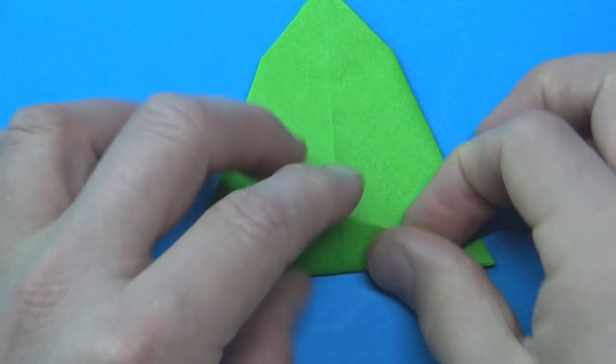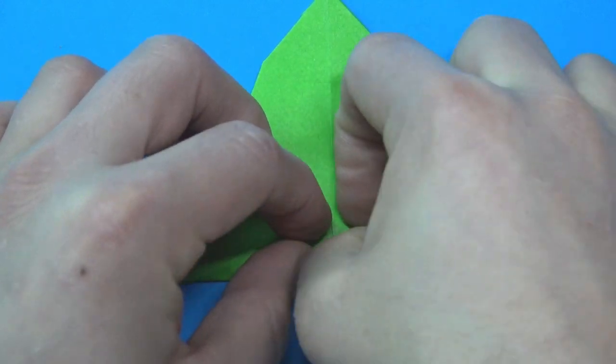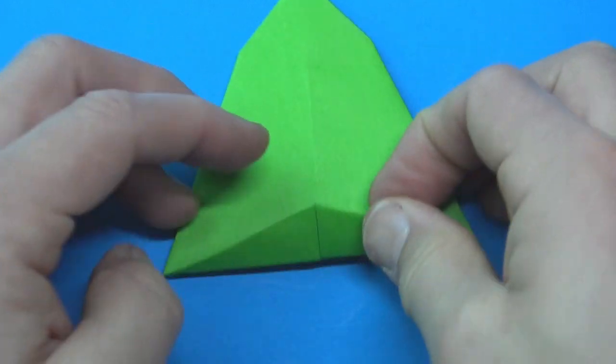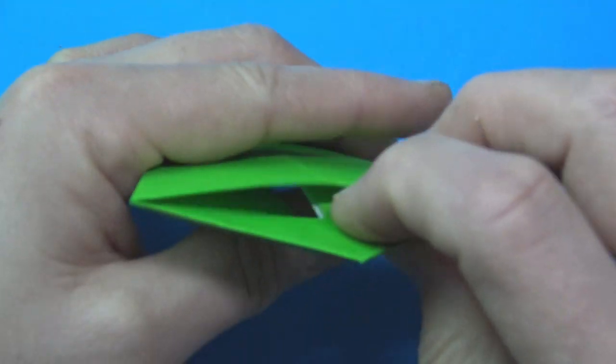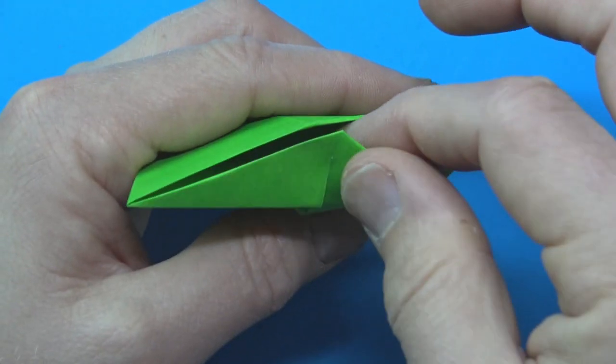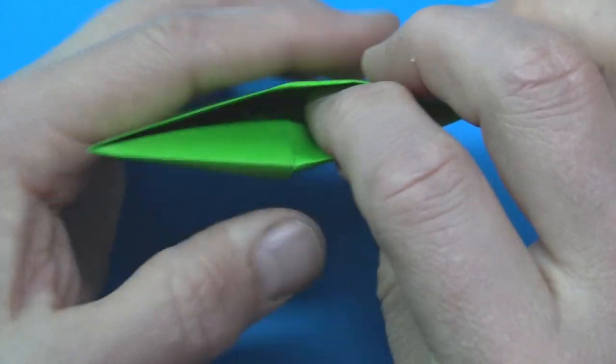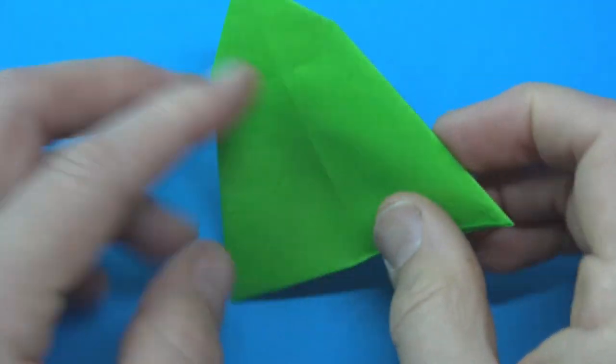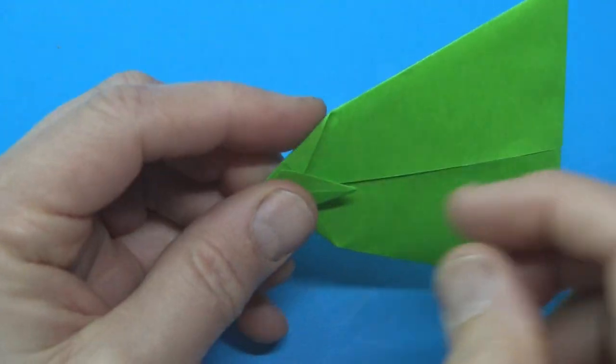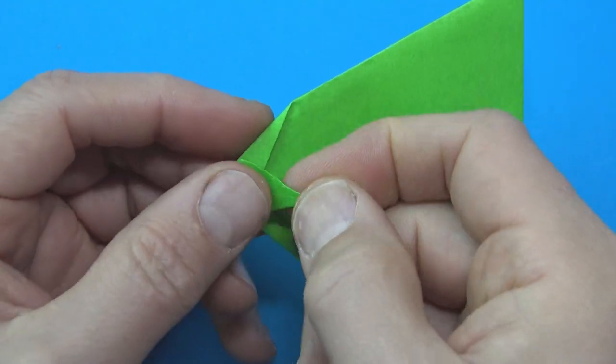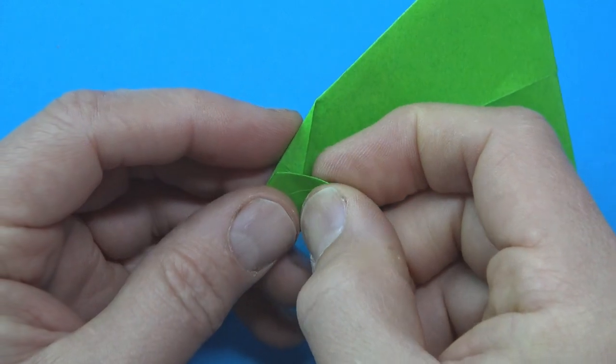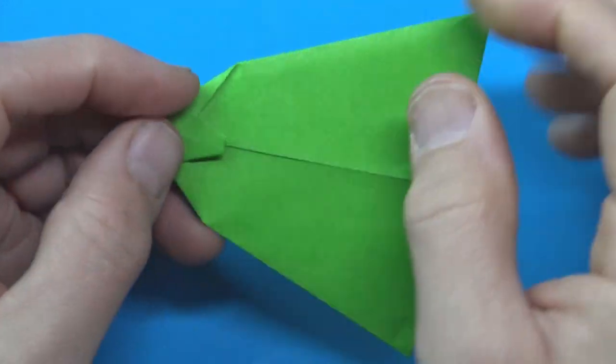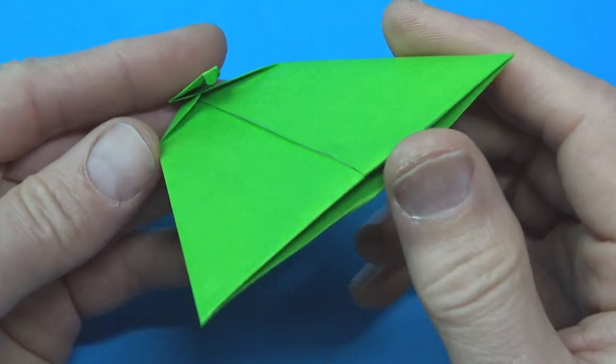And fold this flap up. Unfold. And open the pocket. And fold it into the pocket. And the last step is just fold this flap in just a little bit. And our first module is complete.